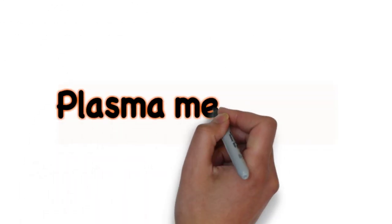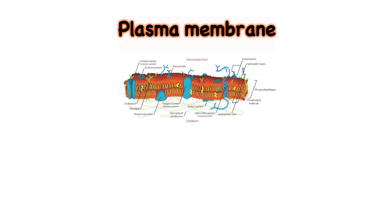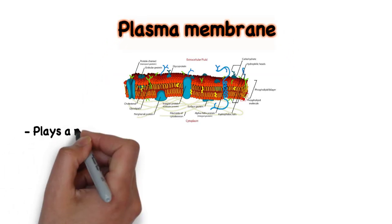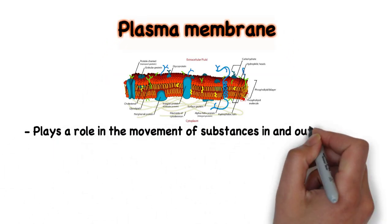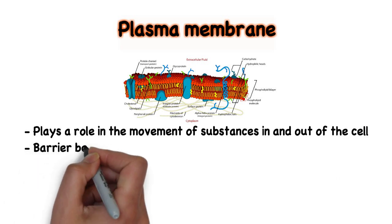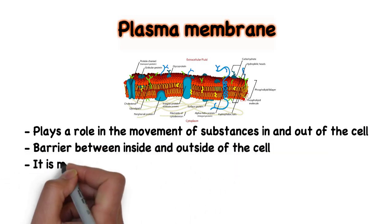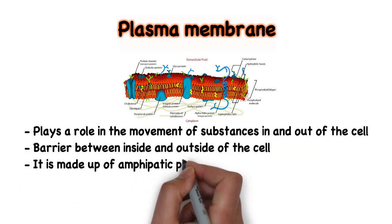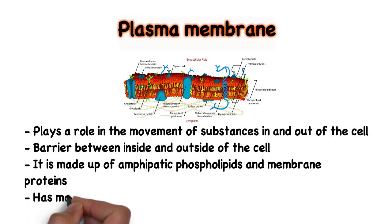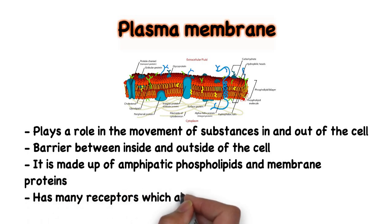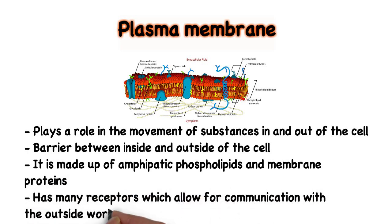The plasma membrane is relevant in controlling movement in and out of the cell, as well as providing a barrier between the inside and the outside of the cell. It is made up of amphipathic phospholipids and has many receptors which allow for communication from the outside world with the cell.